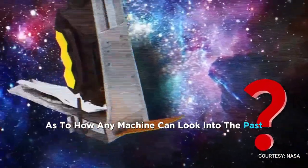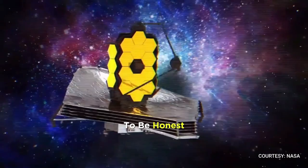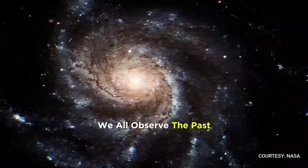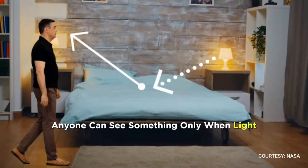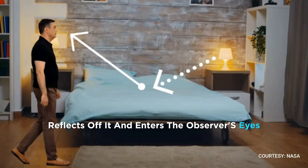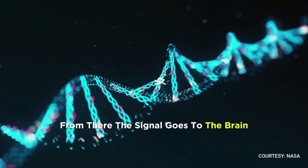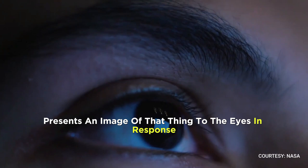The question arises: how can any machine look into the past? To be honest, when we ask this question, we all observe the past. Whether it's a human or an animal, anyone can see something only when light reflects off it and enters the observer's eyes. From there, the signal goes to the brain, and the brain presents an image of that thing to the eyes in response.